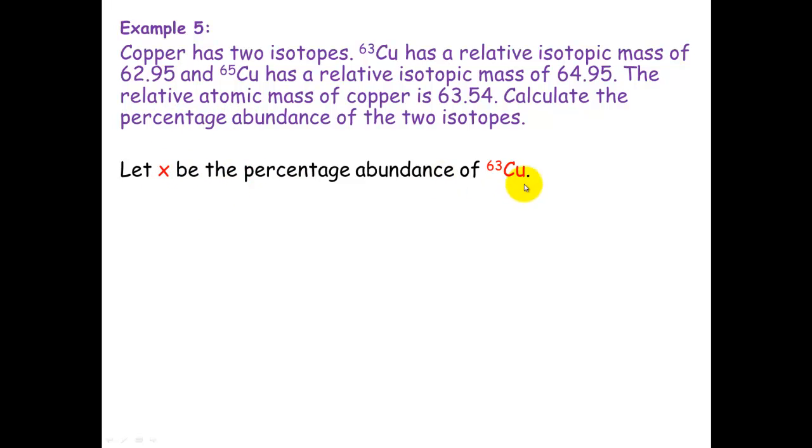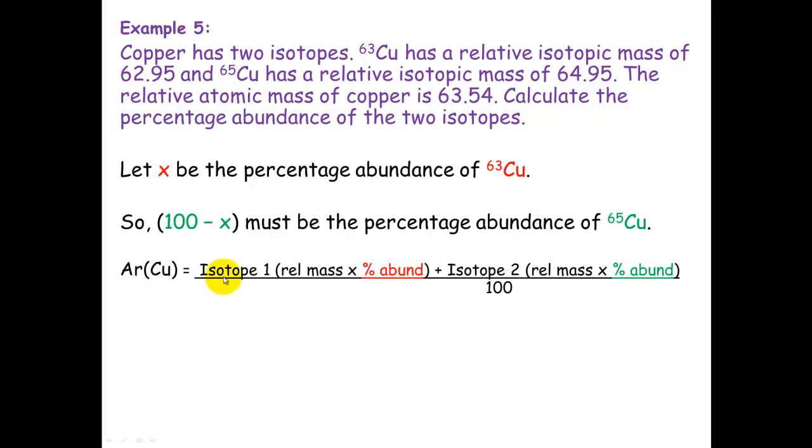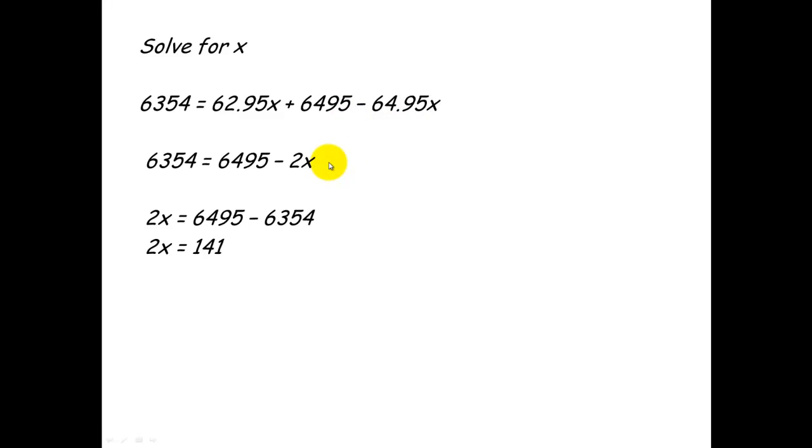So let X be the percentage abundance of copper-63. So therefore, the percentage abundance of copper-65 has to be 100 minus X, because we know that the two of them added together need to equal 100%. Once you've got that bit, it's all just maths from here. So again, our formula, which equals then 62.95 times X plus 64.95 times 100 minus X. You need to work that out mathematically and solve for X. So you just multiply that second part of the equation out and work your way through and solve for X that way.